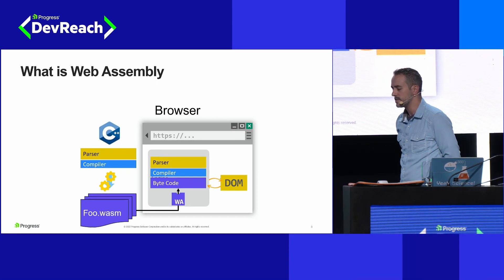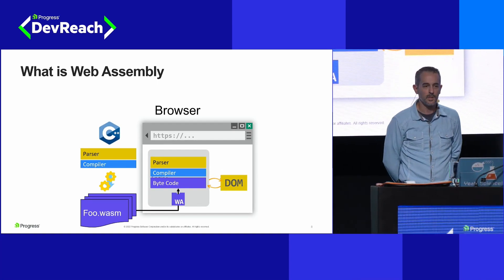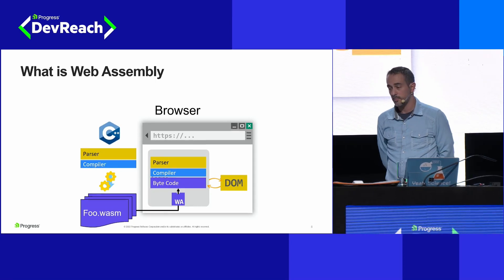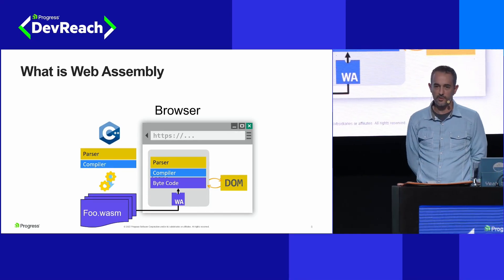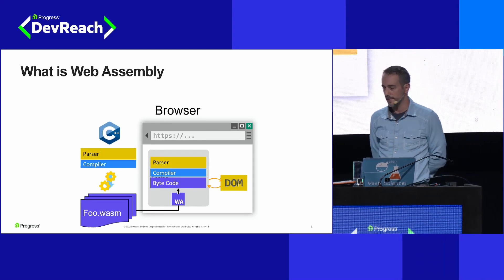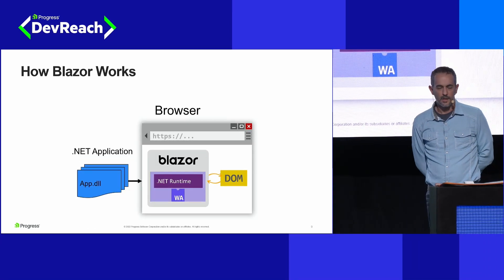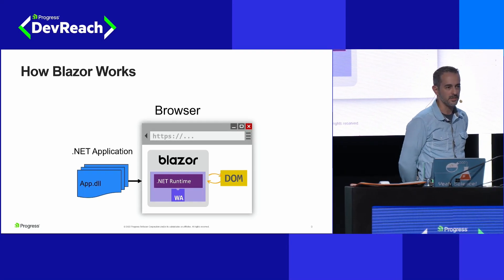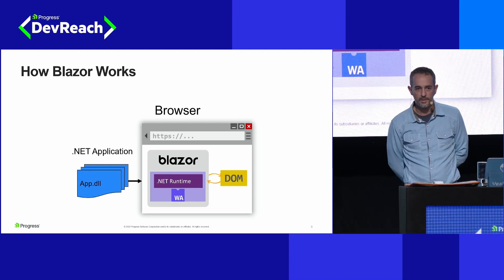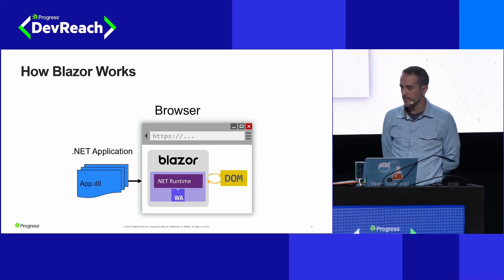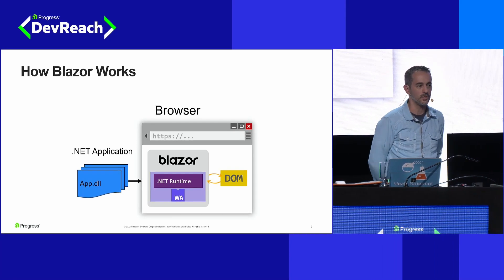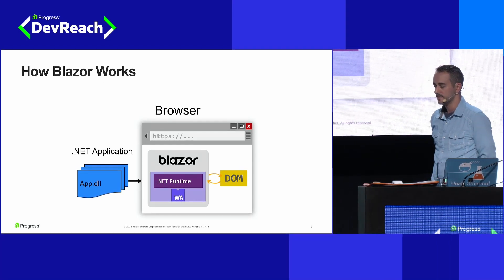WebAssembly came along and allows us to do that parsing and compilation of our code outside the browser, which means we can use languages that are alternative to JavaScript. We can compile C++ code externally, turn that into WebAssembly code, send that to the browser, and skip that parser and compiler internally. That's how Blazor was born. The folks at Microsoft took the .NET runtime, compiled it to WebAssembly, and we can send our DLLs or .NET executable code directly to the browser to run inside that .NET runtime. A lot of us .NET folks don't like to context switch — we like to stay inside one toolchain.